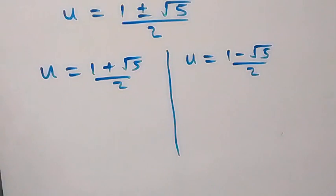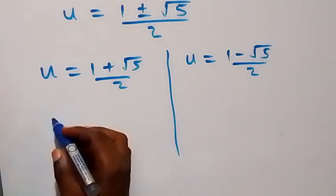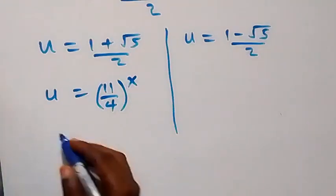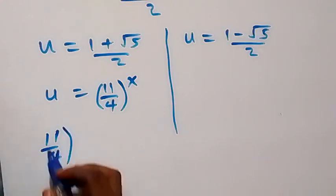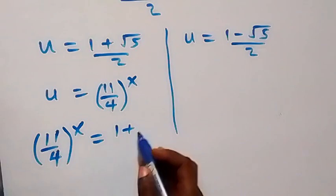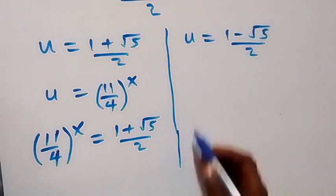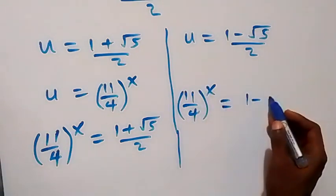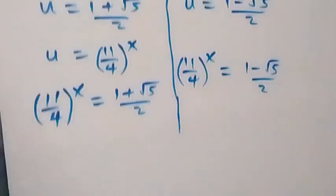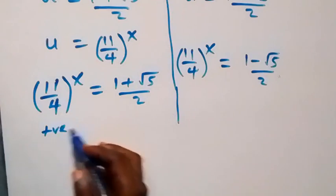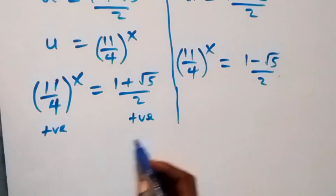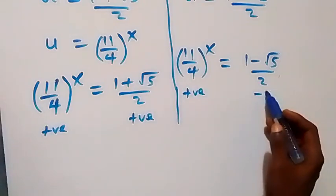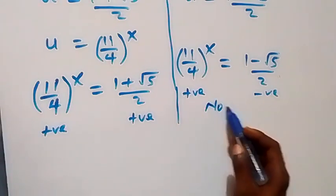Recalling that u equals 11 over 4 raised to power x, we substitute back. On one side we have 11 over 4 raised to power x equals 1 plus root 5 over 2, and on the other side 11 over 4 raised to power x equals 1 minus root 5 over 2. The first value is positive, so there is a solution. The second value is negative, so there is no solution there — we reject that side.